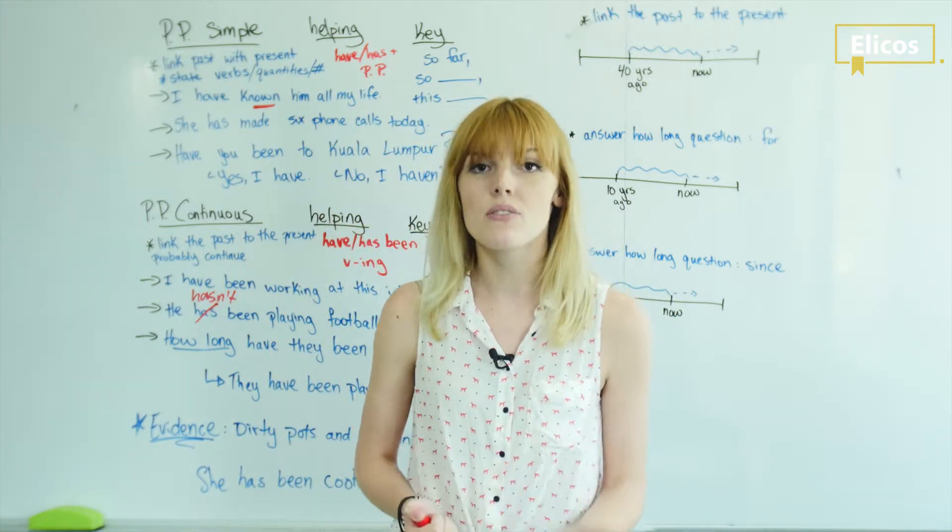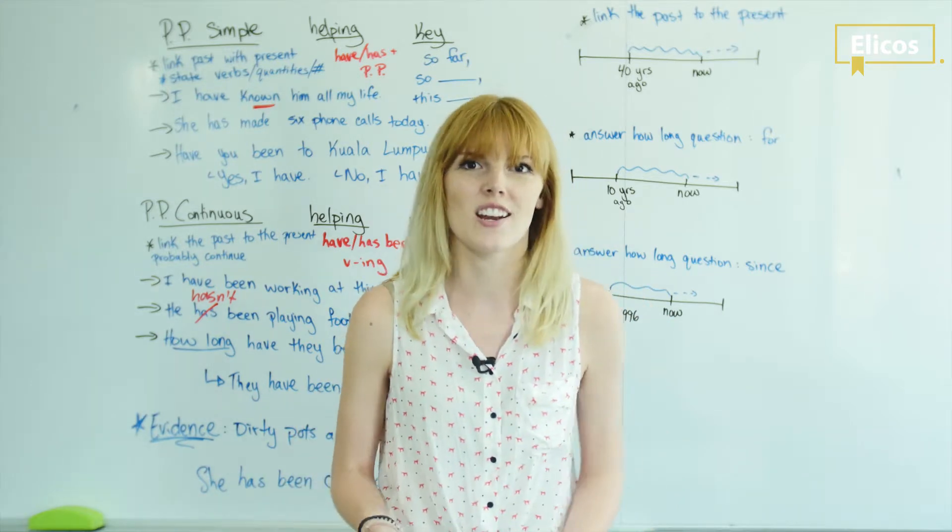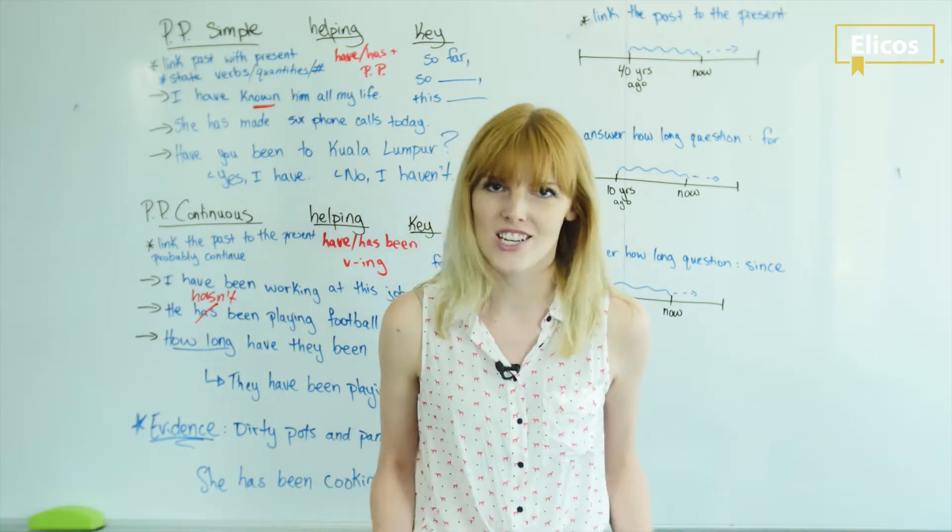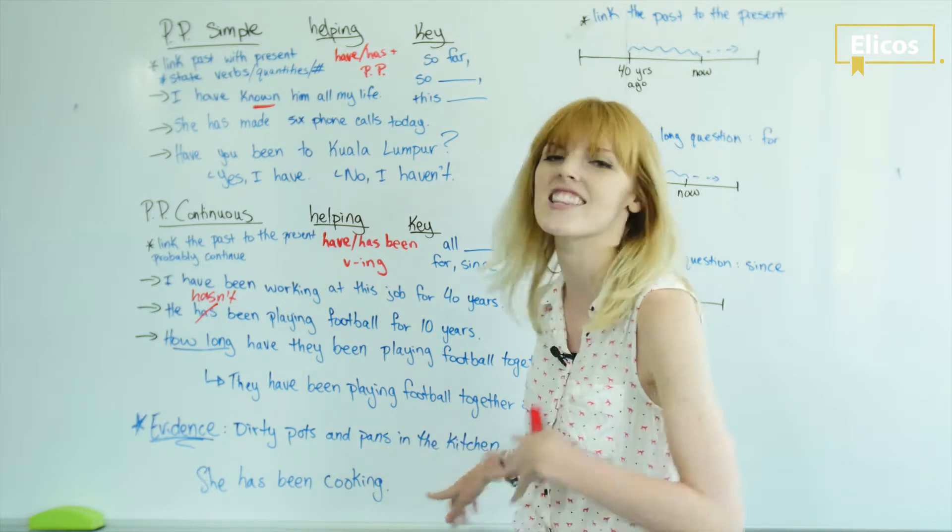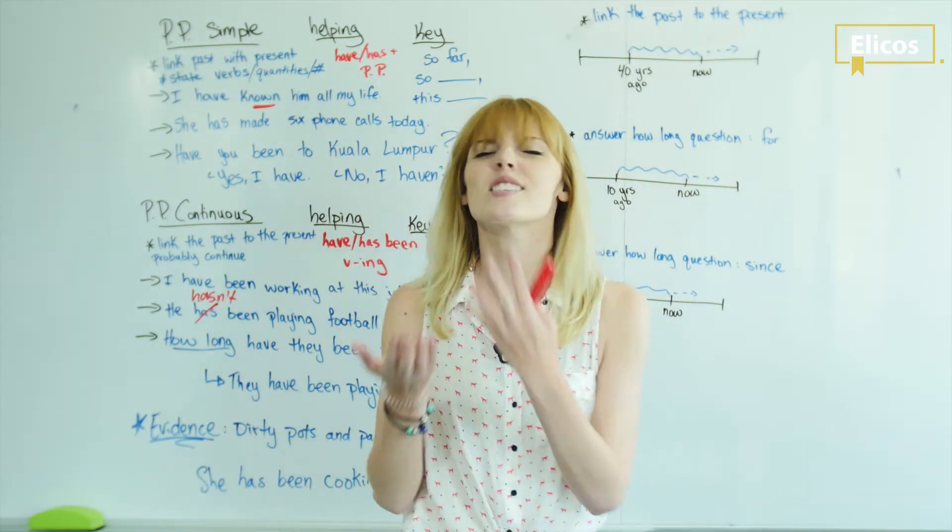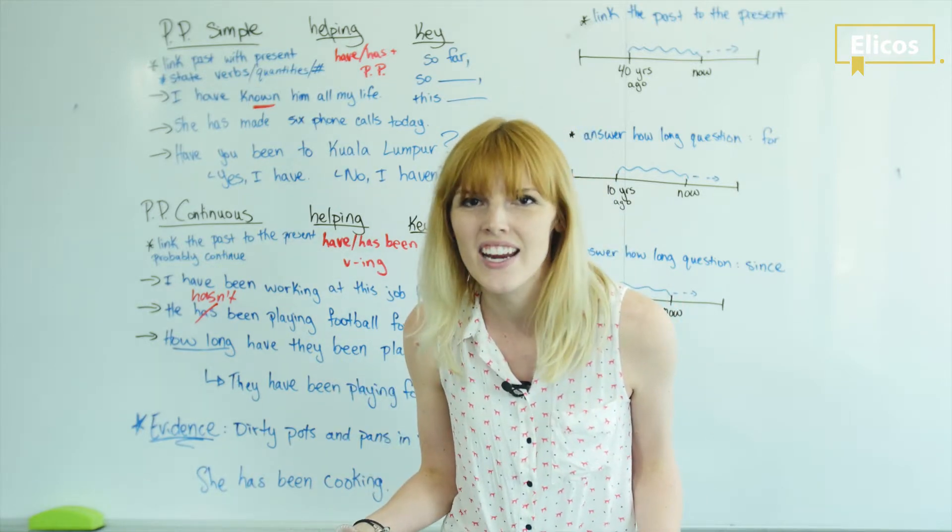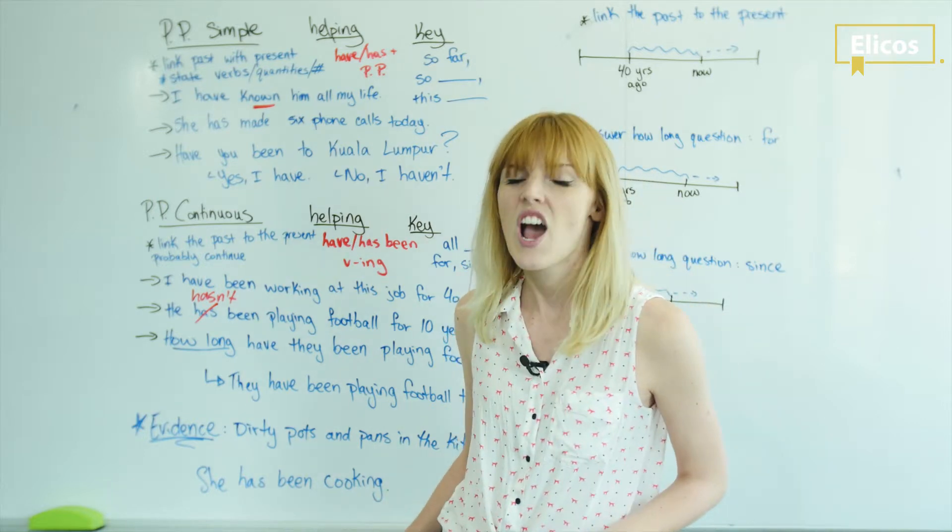When we use the continuous, a really popular way of using it is when we have evidence of a situation. So maybe you walk home and your mom's in the kitchen and you see that there are dirty pots and pans in the kitchen. They are just everywhere and you can smell the food that's there. What has she been doing? Well, she has been cooking. We have evidence of it.